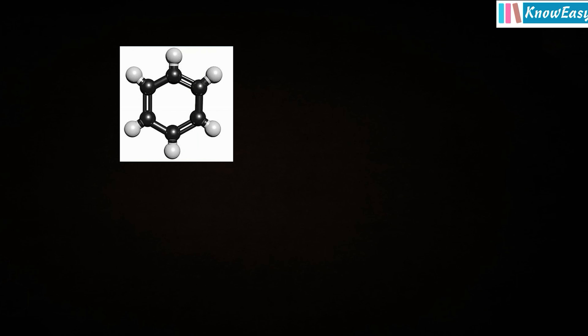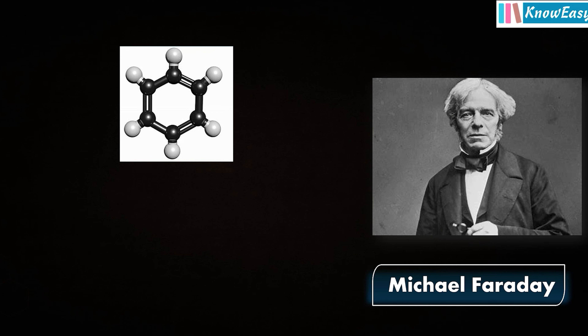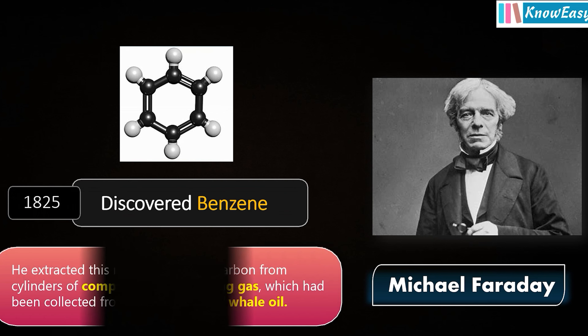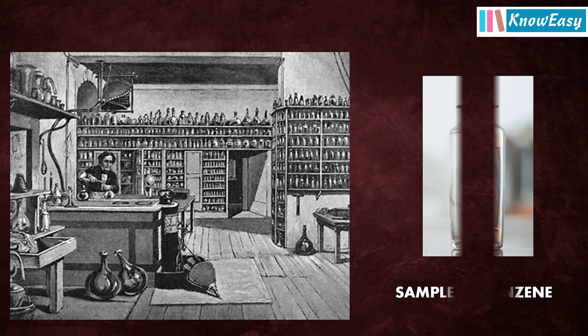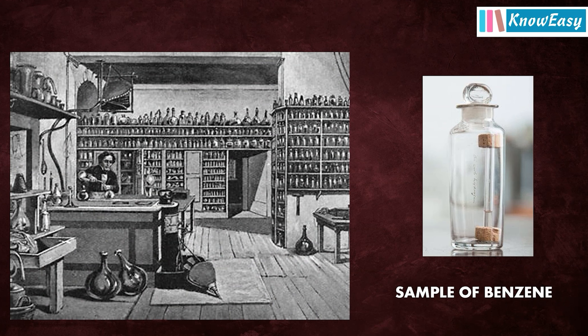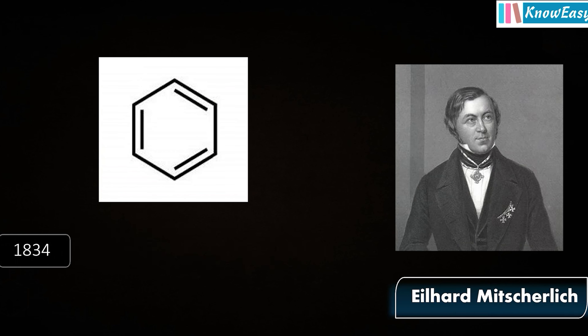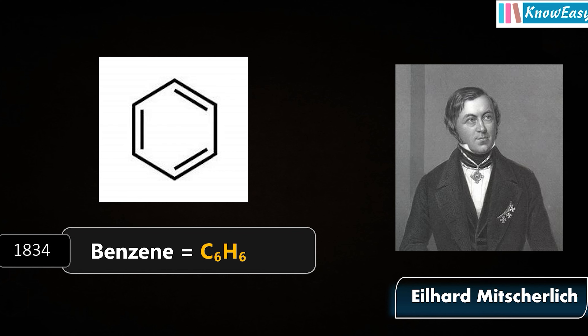The word benzene derives historically from gum benzoin, sometimes called Benjamin gum, which was known as an aromatic resin. Michael Faraday, an English scientist, first discovered benzene in 1825. He extracted this remarkable hydrocarbon from cylinders of compressed illuminating gas collected from the pyrolysis of whale oil. The name benzene was given by German chemist Mitscherlich in 1834, who also determined the empirical formula of benzene as C6H6.